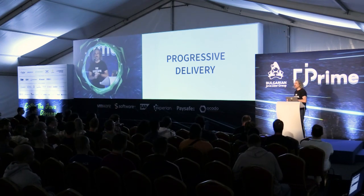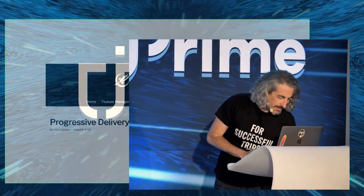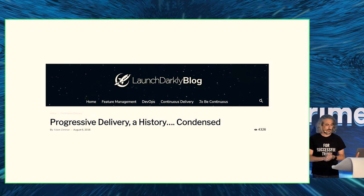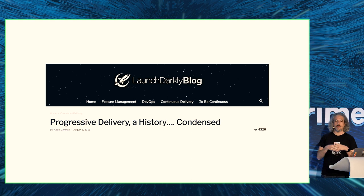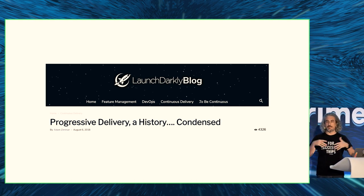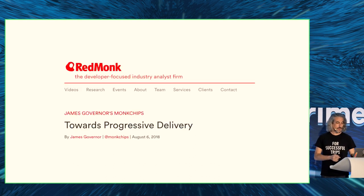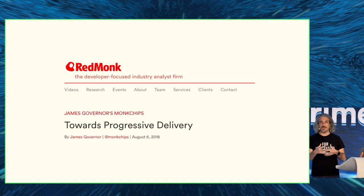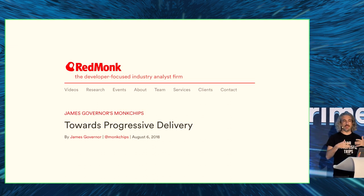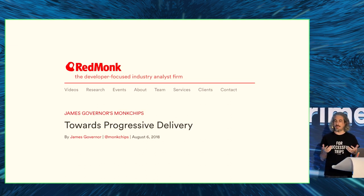Progressive delivery is a term that started some time ago — about five years ago, more or less. It started as a concept from LaunchDarkly, the company doing release toggles. It was also pushed by an analyst company called Redmond on how progressive delivery will help you achieve the goals that everybody deploying software has.